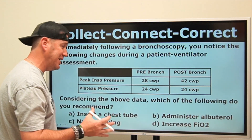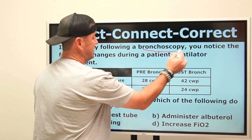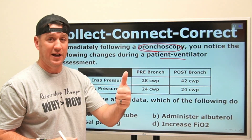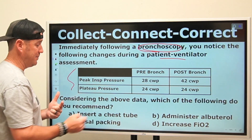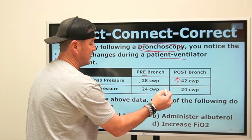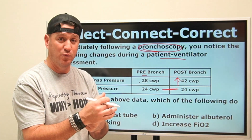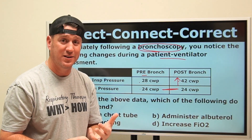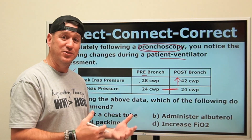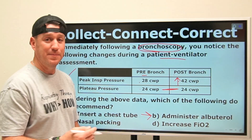These questions can be presented in various formats. Here's the same scenario shown as a data table: immediately following the bronchoscopy, peak inspiratory pressure pre-28, post-42 — that's increased. Plateau pressure pre-24, post-24 — unchanged. Same story. Collect: increasing peak inspiratory pressure with unchanged plateaus, patient on a vent, following a bronch. Connect: increased airway resistance. Hazard: bronchospasm. What should you do? Administer albuterol. Same answer.